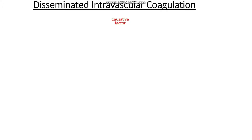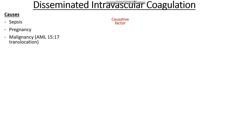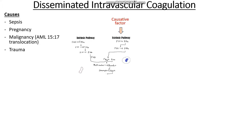In DIC we have a very complex interaction between some causative factors. This could include things like sepsis, pregnancy, malignancy — specifically a form of acute myeloid leukemia known as acute promyelocytic leukemia where we have a 15;17 translocation — or trauma.